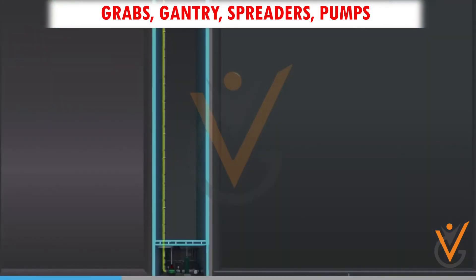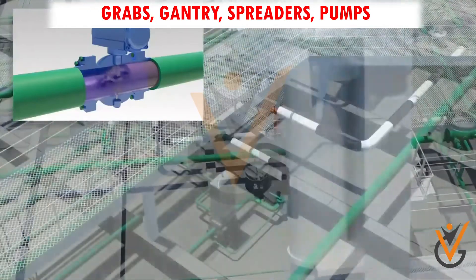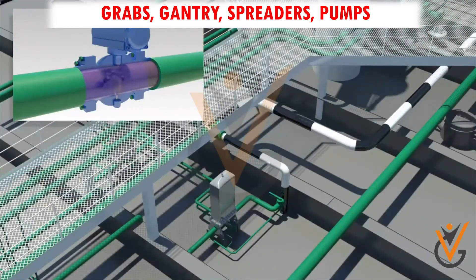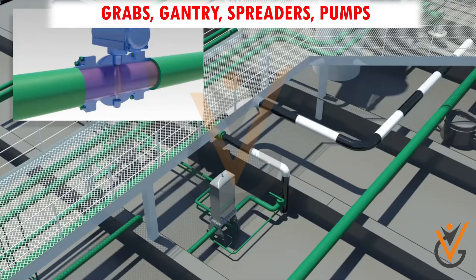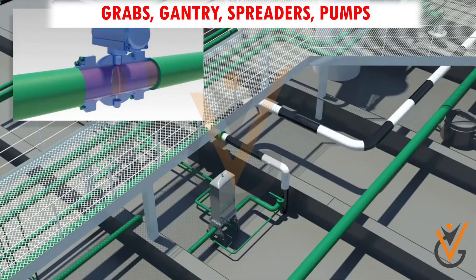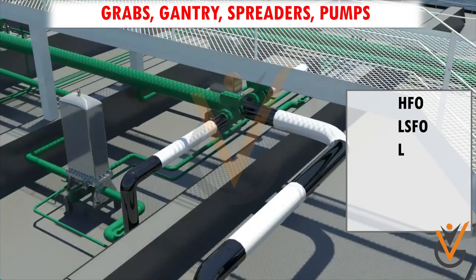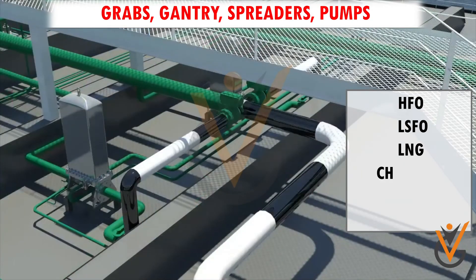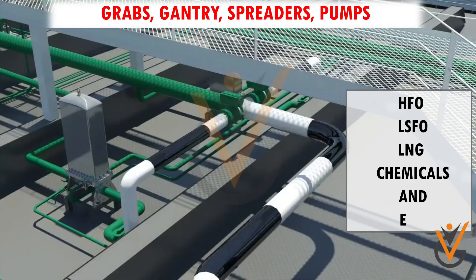Cargo pumps are used to load large volumes of fuel oil on cargo shipping vessels at the departure port and unload at the arrival destination. Cargo pumps are used on board vessels for the loading and unloading of fuels such as HFO, LSFO, LNG, and chemicals.